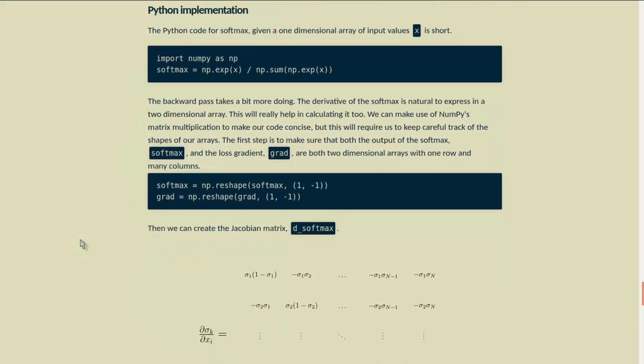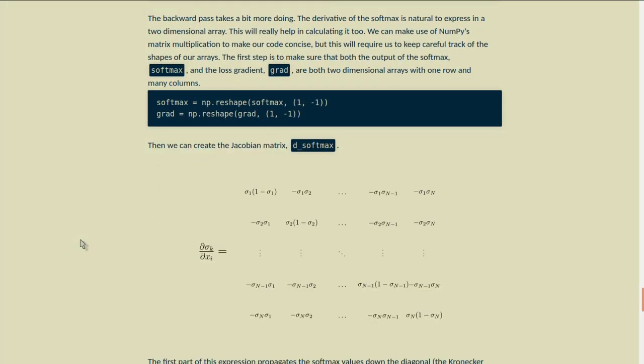The backward pass takes a bit more doing. The derivative of the softmax is natural to express in a two-dimensional array. This will really help in calculating it too. We can make use of numpy's matrix multiplication to make our code more concise, but this will require us to keep careful track of the shapes of our arrays. The first step is to make sure that both the outputs of the softmax and the loss gradient are both two-dimensional arrays with one row and many columns.